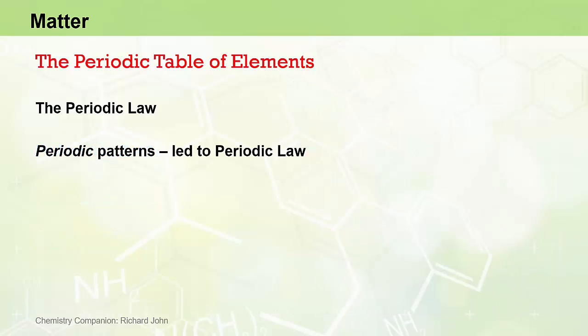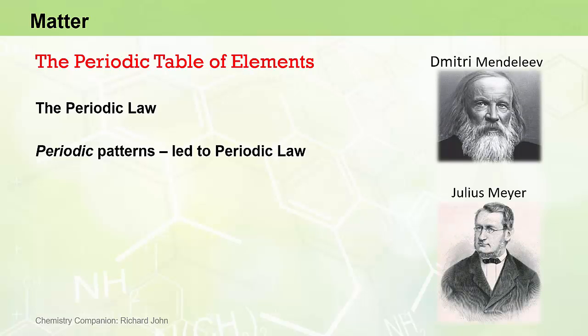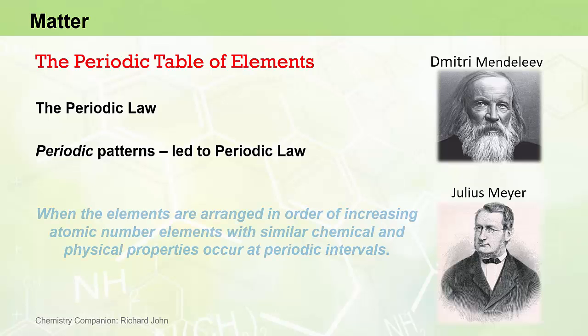These observations of regular, repeating, or periodic patterns of properties, culminated in the independent discovery of what is now known as the Periodic Law, by both Dmitri Mendeleev and Julius Meyer in 1869. The modern version of the Periodic Law states that when the elements are arranged in order of increasing atomic number, elements with similar chemical and physical properties occur at periodic intervals.